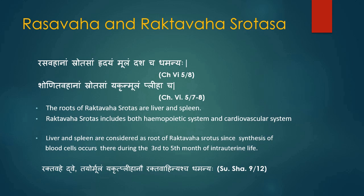Rasvaha and Raktavaha Srotas: The mula of Rasvaha srotas is Hridaya and Dhamani. Hridaya is the reservoir of blood and causes pumping of blood, and Dhamani causes the circulation of blood. The roots of Raktavaha srotas are liver and spleen. The role of the liver in erythropoiesis is well known — RBC synthesis occurs in liver and spleen between the 3rd to 5th month of intrauterine life. Liver stores important factors like vitamin B12, folic acid and iron. Spleen is the slaughterhouse of RBC. Acharya Shushrut has also considered Raktavaha Dhamni as root of Raktavaha srotansi, meaning Raktavaha srotas includes both the hemopoietic and cardiovascular systems. This may be due to the fact that both precursors of hemopoietic stem cells and angioblasts are formed from the blood island during embryological development.